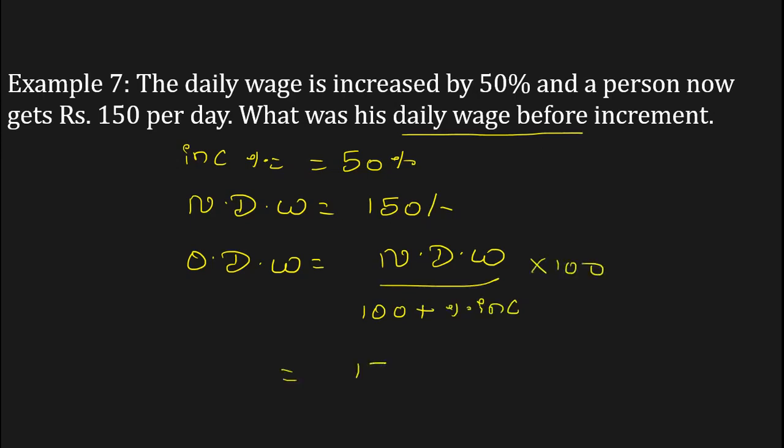= 150, and the percent increased = 50. So we have (150 / (100 + 50)) × 100. Now solve this: 150 ×